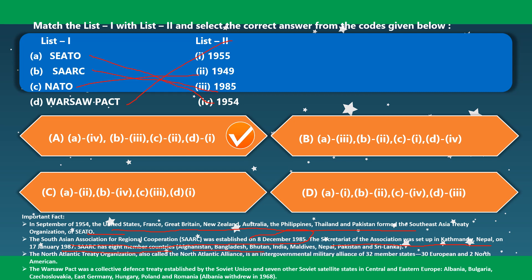SAARC has 8 member countries: Afghanistan, Bangladesh, Bhutan, India, Maldives, Nepal, Pakistan and Sri Lanka. The North Atlantic Treaty Organization (NATO), also called the North Atlantic Alliance, is an intergovernmental military alliance of 32 member states — 30 European and 2 North American. The Warsaw Pact was a collective defense treaty established by the Soviet Union and seven satellite states: Albania, Bulgaria, Czechoslovakia, East Germany, Hungary, Poland and Romania.